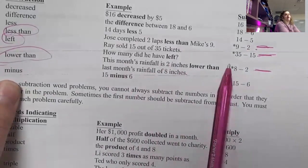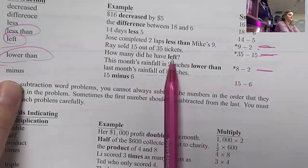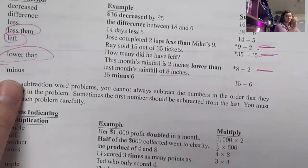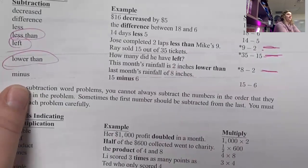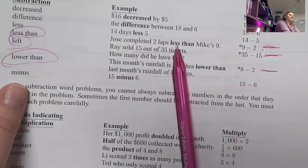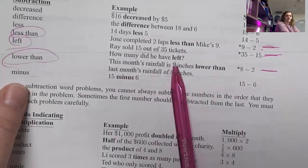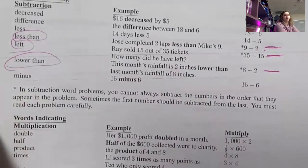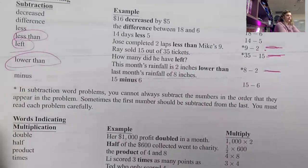So it says this month's rainfall is two inches lower than last month's of eight. So that's eight minus two. So you switch the order. So instead of saying two minus eight, switch that order, because there was that than in there. So than, less than, lower than, left. Those are the ones you have to worry about switching the order. Okay.